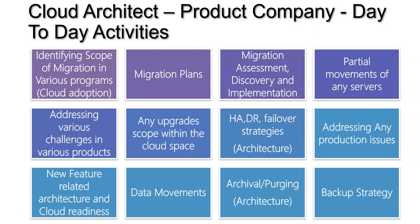Addressing production issues: when a server is down, the architect also needs to jump into the situation. You might wonder why — that's the DevOps or support team's job — but as an architect you should know what is happening, what needs to be done, and what can be done. Various problems come up even in production: server down, performance not meeting expectations, data piling up causing response times to degrade. The architect needs to address all of those.